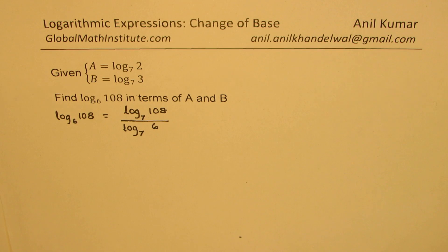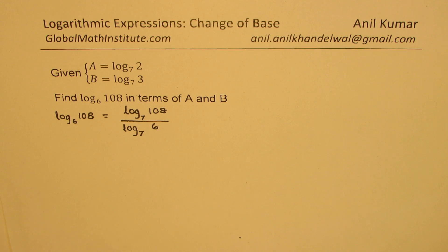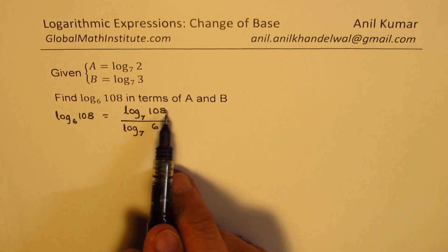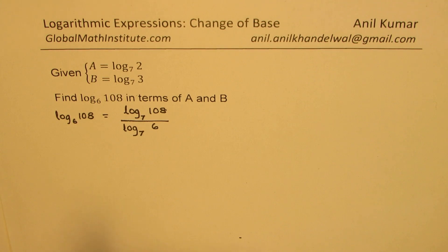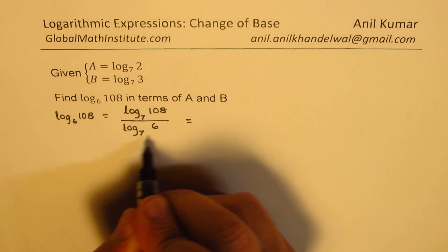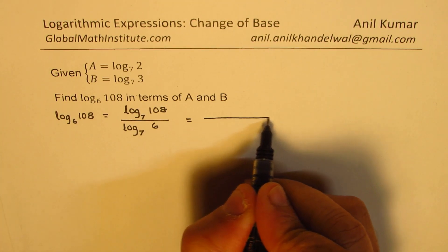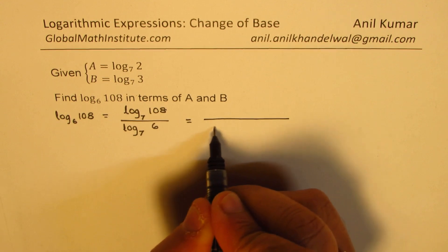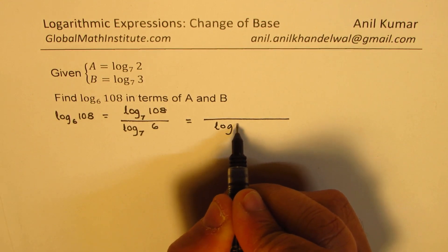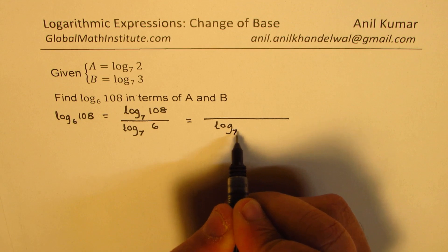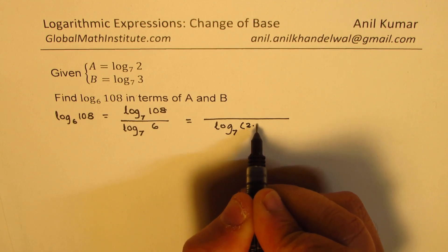This is the change of base formula. Now, how can we break down the numbers 108 and 6? The denominator is fairly clear — we can write 6 as the product of 2 and 3.